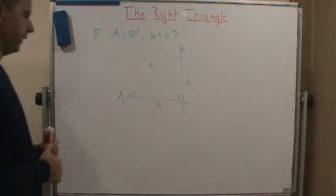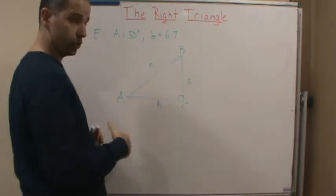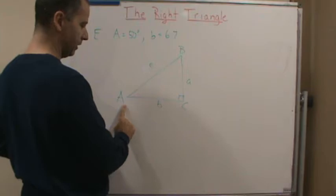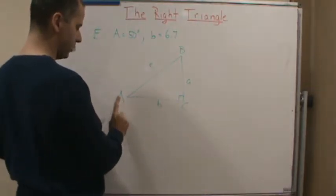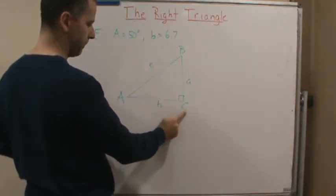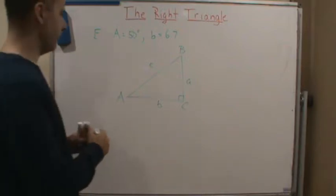Okay, remember, the corners are the angles, those are capital letters, and then the side opposite the angle are the lowercase letters. So capital A, lowercase a, capital B, lowercase b, capital C, lowercase c. Okay, now, what do they give us?